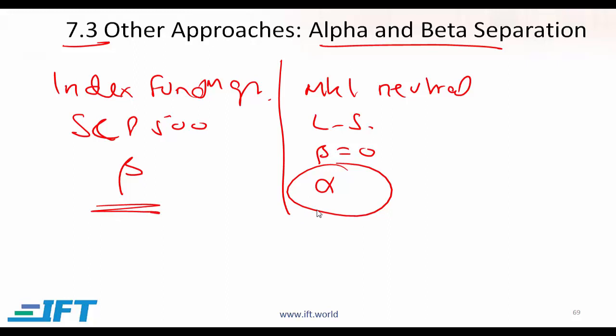You have separated the beta and the alpha. And then depending on what you are trying to accomplish, you can put 80% of your money here and 20% of your money here. Depending on your perspective and objective, you can essentially put the appropriate weightage in the beta and the alpha. So what you have essentially done here is alpha and beta separation.